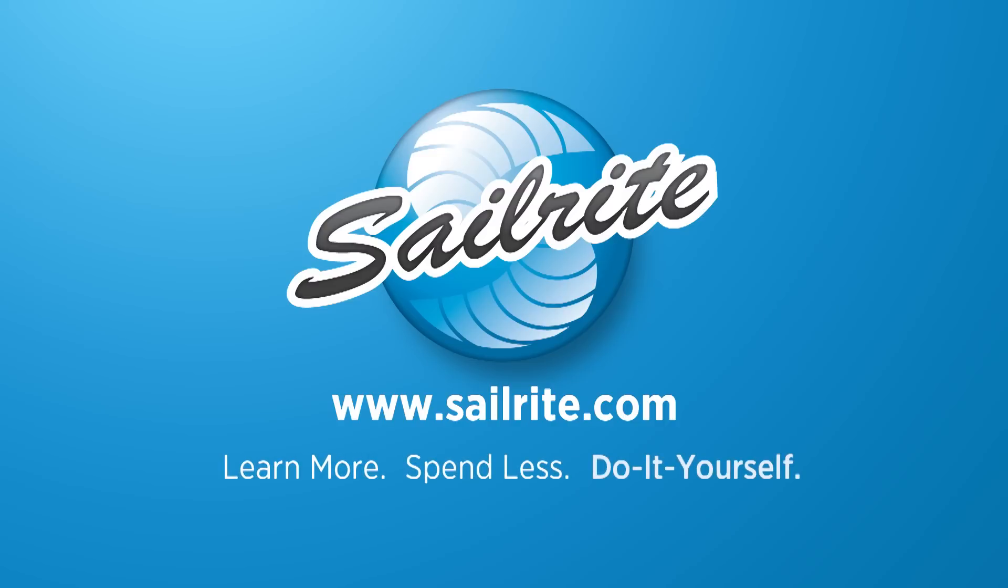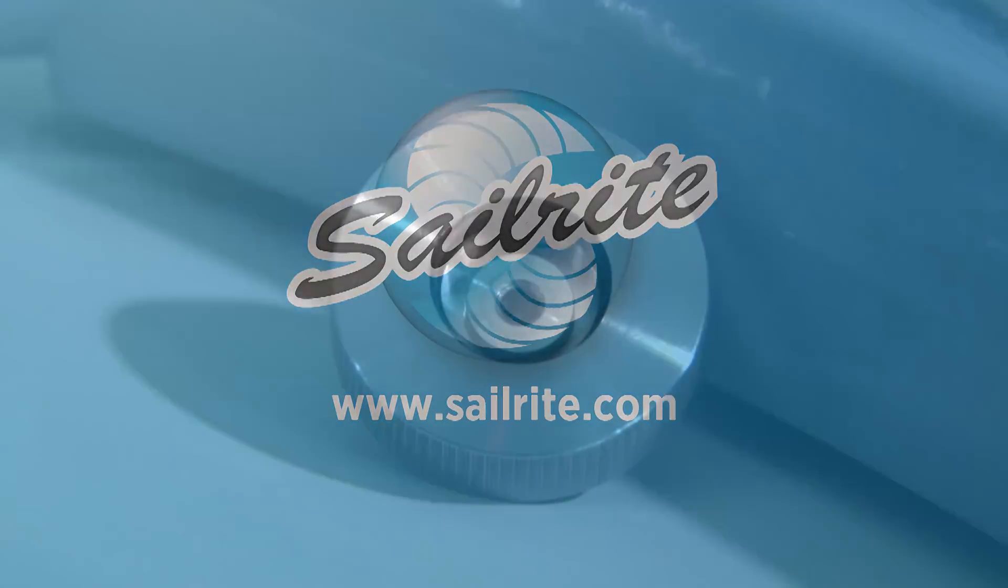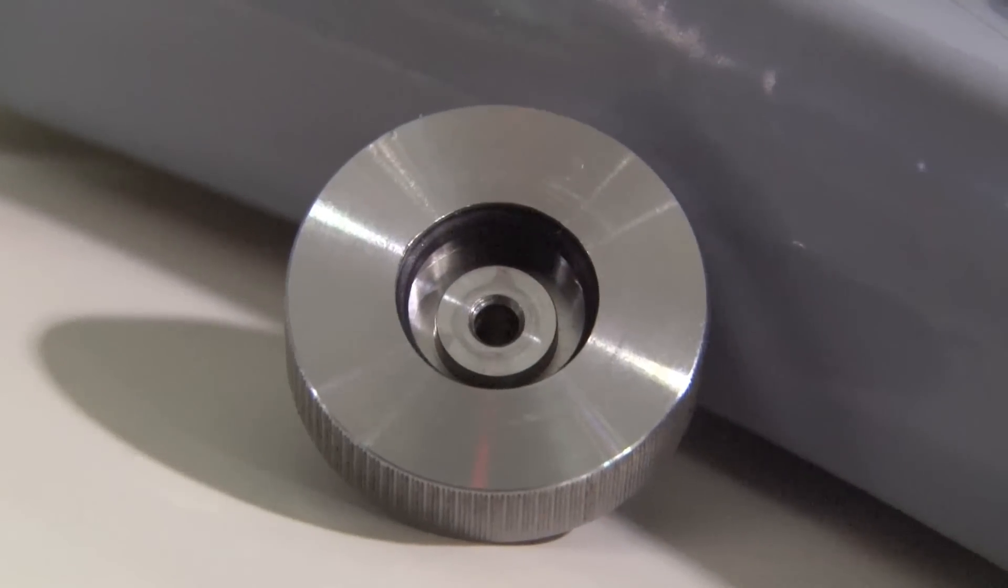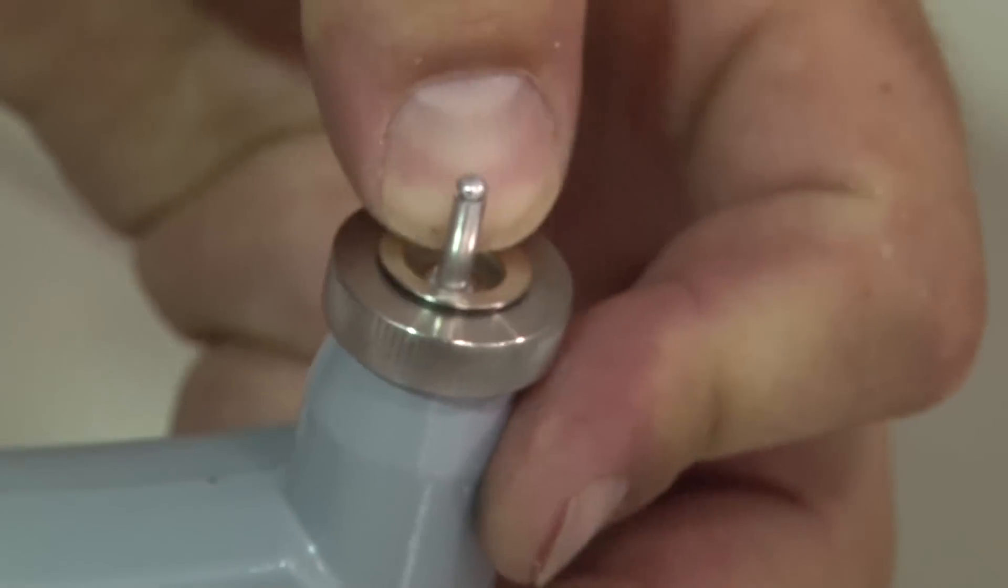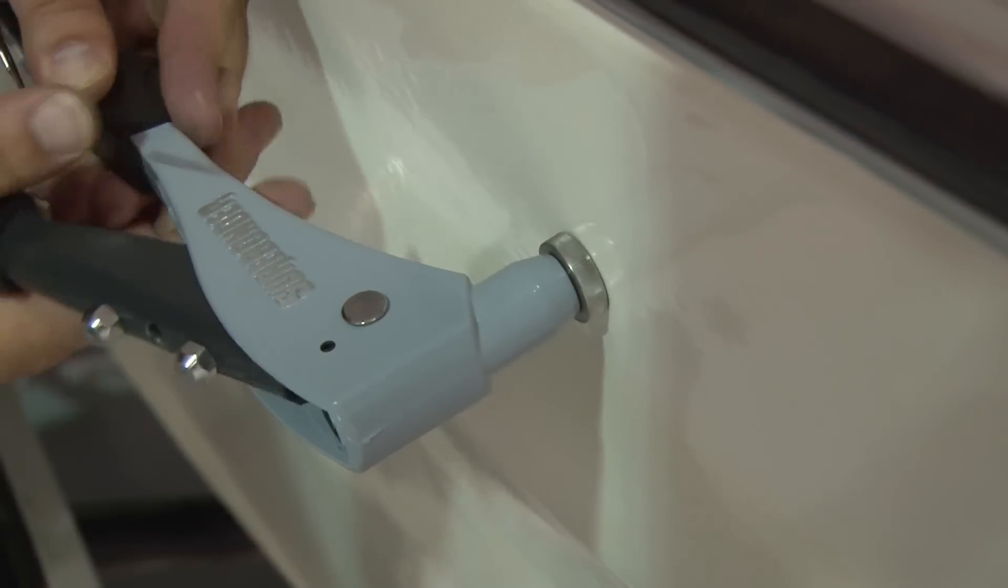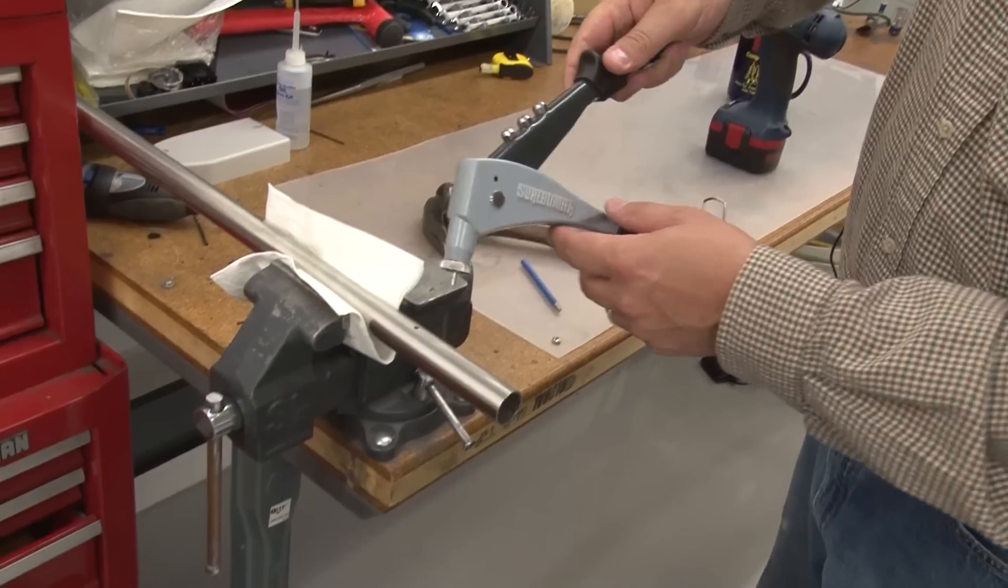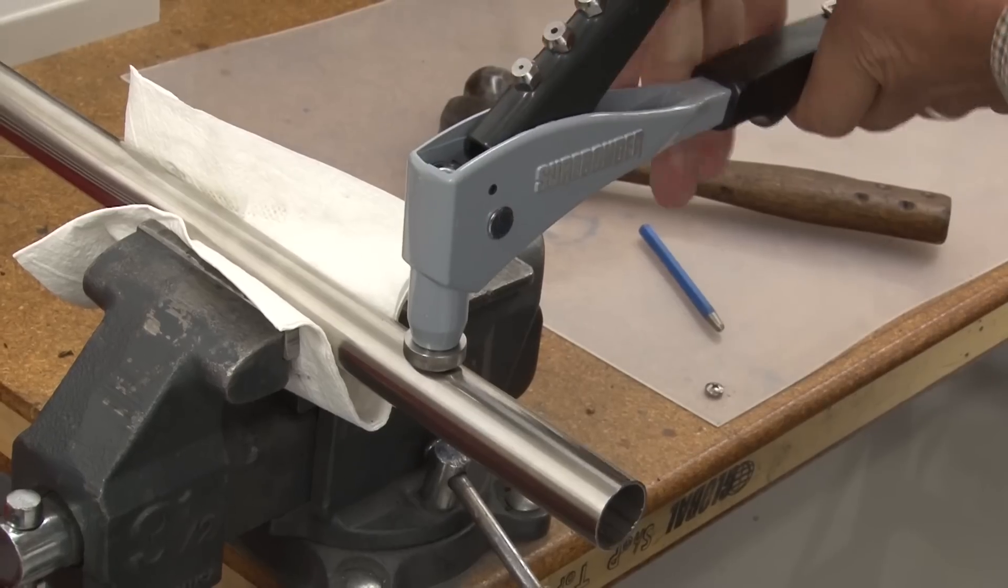This video is brought to you by Sailrite. Sailrite proudly introduces the Snaprite Surface Mount Stud Die. With this special die, you can easily set a snap stud into a hard surface using a standard riveting tool.